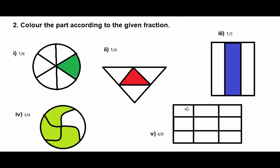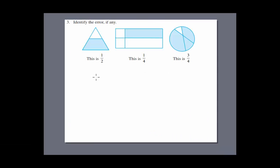Last one says four over nine — there are total nine and we are going to paint four out of them. You can paint any of them as stated earlier.